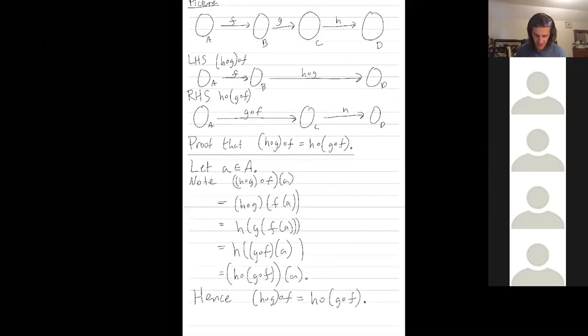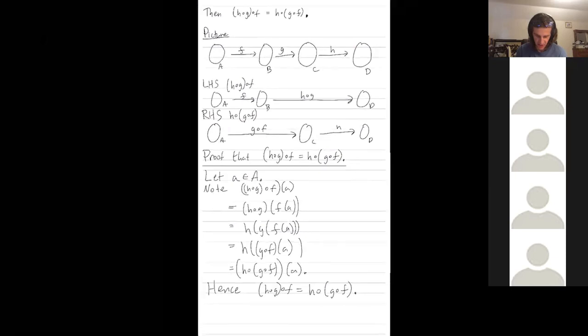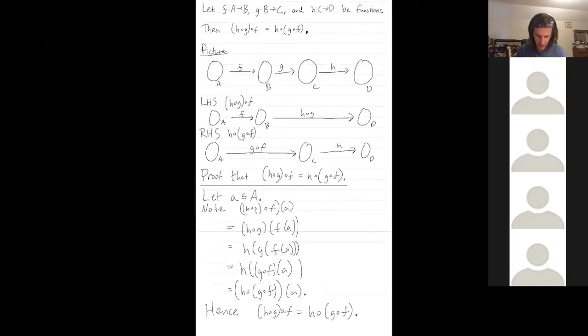So this might feel a little to you like alphabet soup, but we've proven that if you have three functions in a row, then there's really only one way to map from the very initial input space A to the very final output space D.